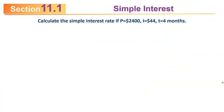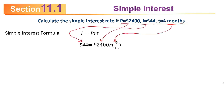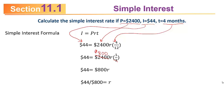Calculate the simple interest rate if P = $2,400, I = $44, and t = 4 months. We use I = PRT and solve for r. With I = $44, P = $2,400, and t = 4/12 = 1/3 years: 1/3 × 2,400 = 800, so 44 = 800r. Dividing both sides by 800 gives r = 0.055, which is 5.5%.